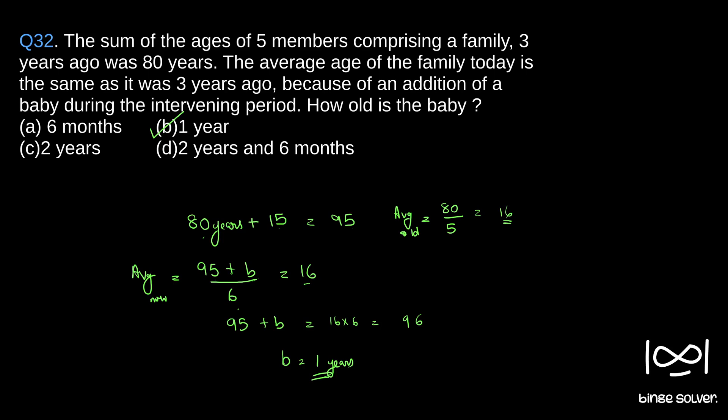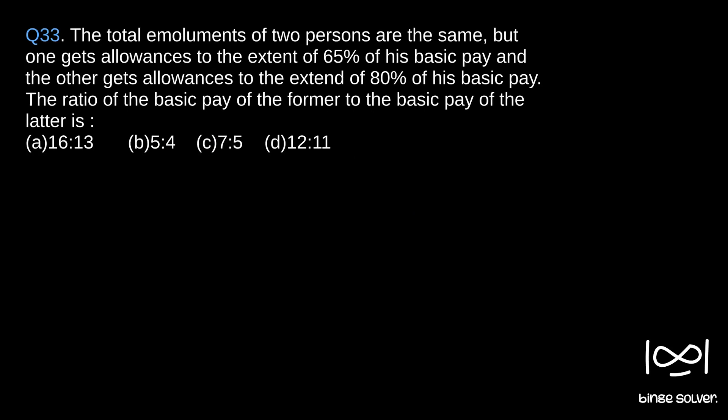Next question, question 33. The total emoluments of two persons are the same, but one gets allowances to the extent of 65% of his basic pay and the other gets allowances to the extent of 80% of his basic pay. The ratio of basic pay of the former to the basic pay of the latter is...